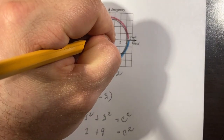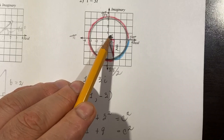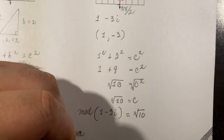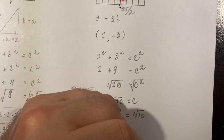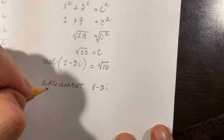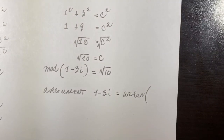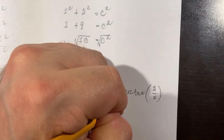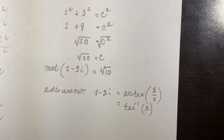Math gives us a very cool trick called the arc tangent. What arc tangent says is: give me the opposite over the adjacent, and plug that into arc tangent, and I'll give you the angle. So the argument of 1 minus 3i equals arc tan — or on the calculator, tan negative 1 — of the opposite side, which is 3, over the adjacent side, which is 1. It's basically just arc tan of 3. So let's go to the calculator and do it both in radians and in degrees.